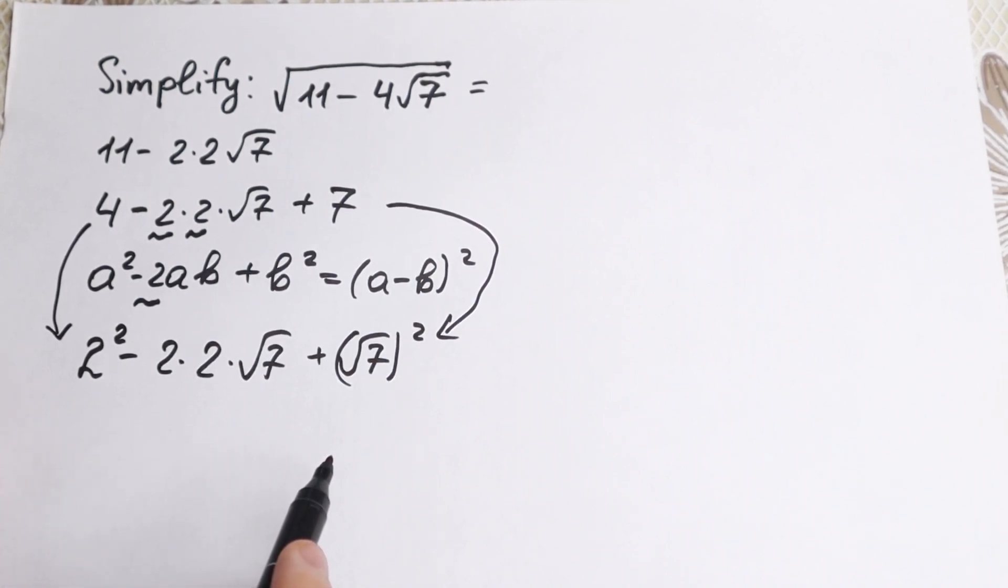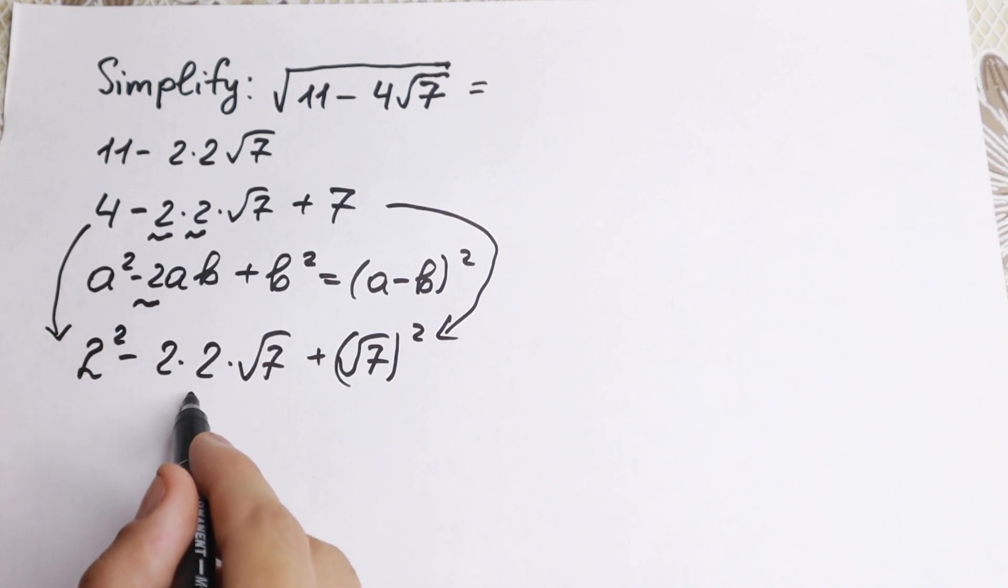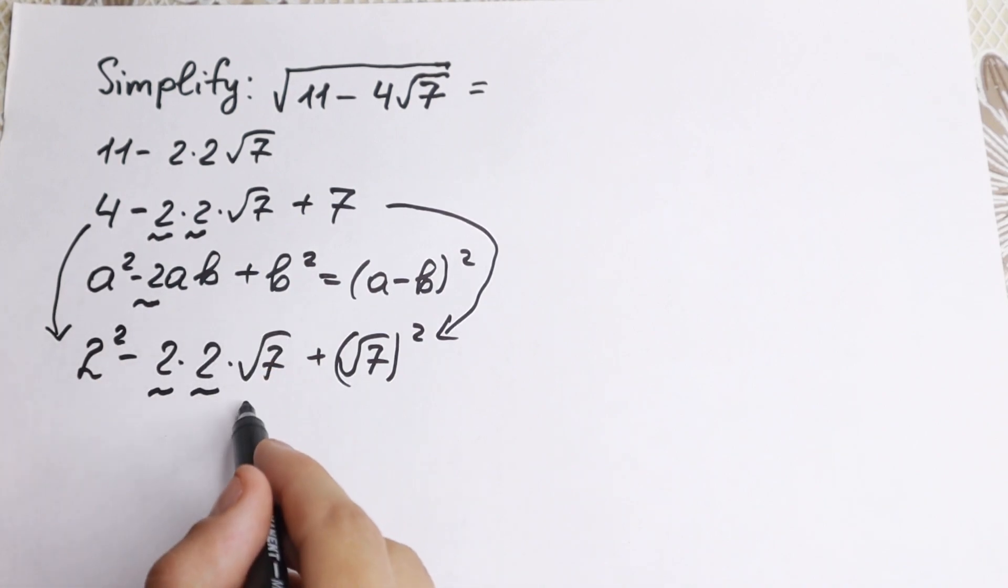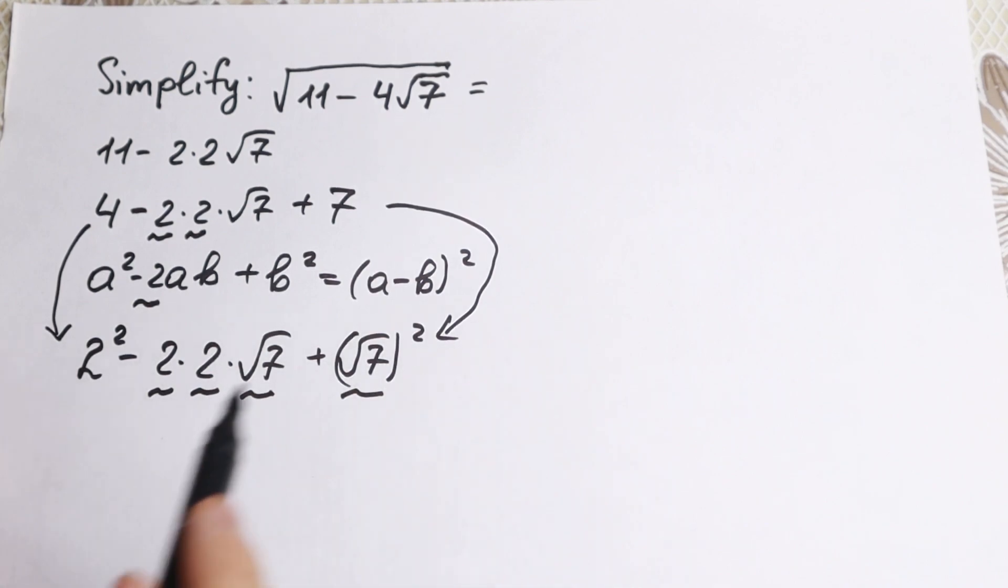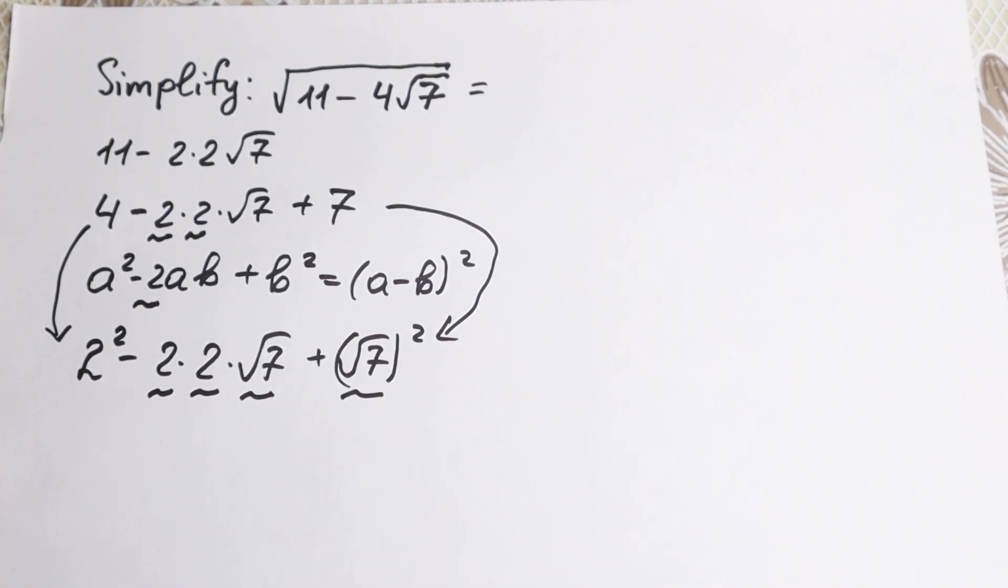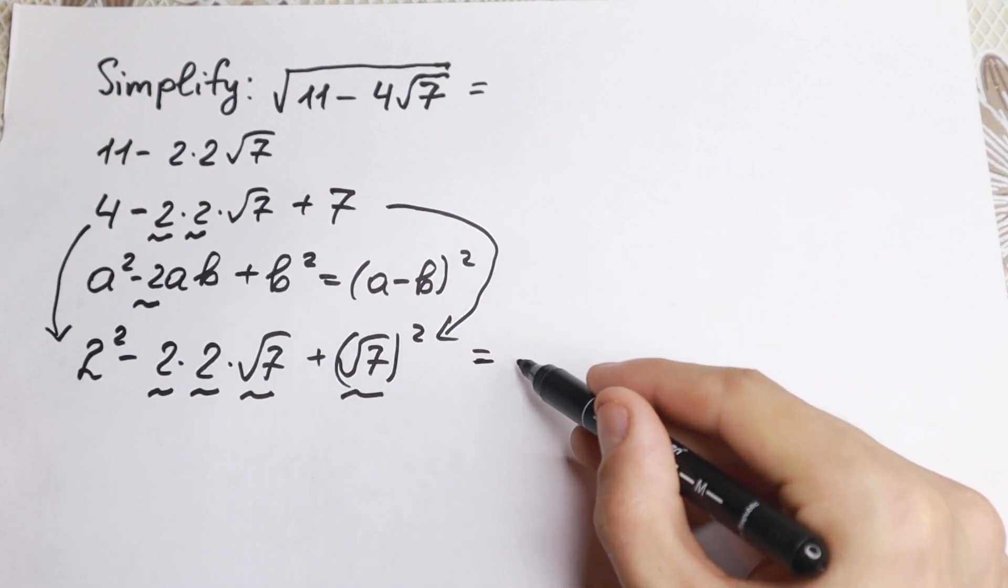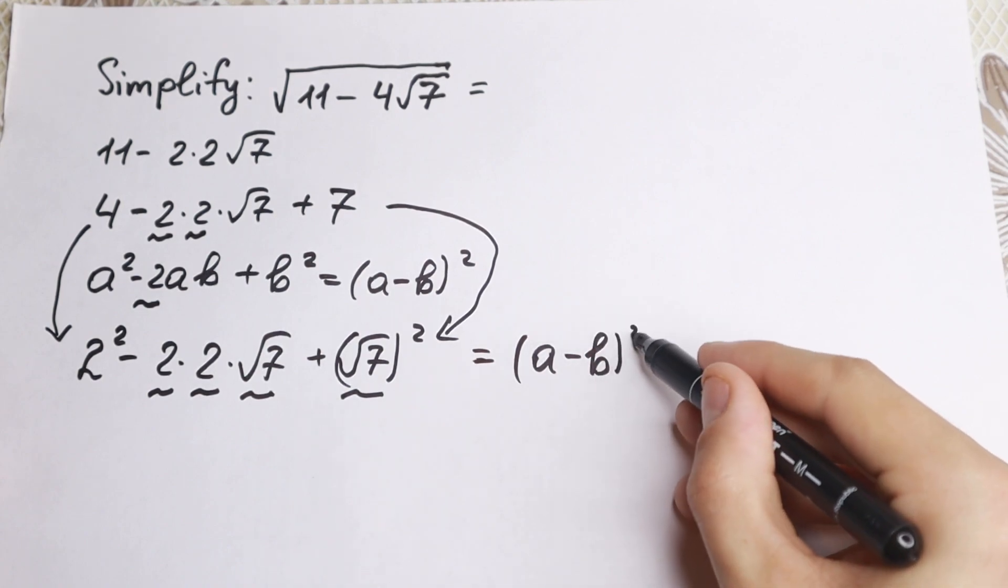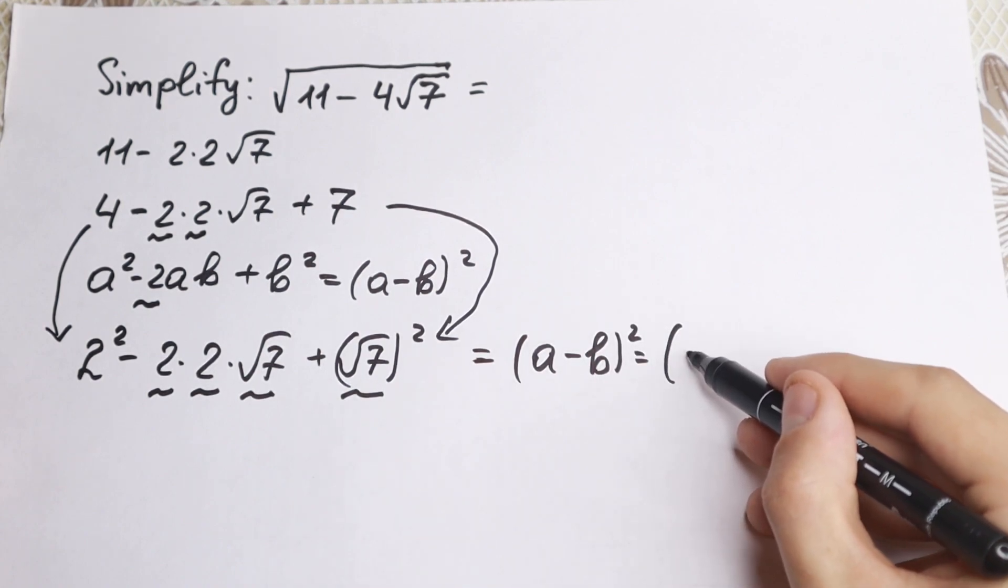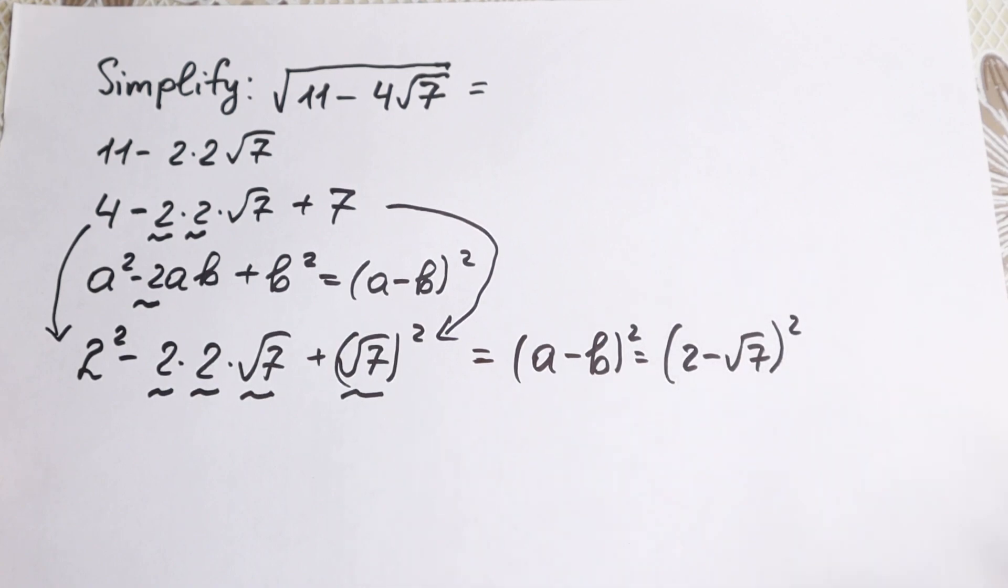Now take a look closely, what do we have? We have a squared, we have 2ab, we have b squared, so it looks like this is our case, this is our formula. So let's write it. This is equal to (a minus b) squared, so (2 minus square root of 7) squared. This is our formula.